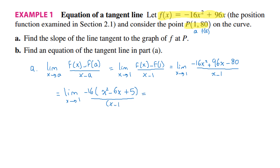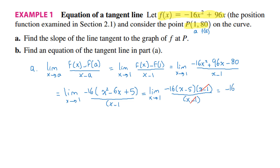Now let's factorize more. We get the limit as x goes to 1 of minus 16 into x minus 5 and x minus 1, divided by x minus 1. We can simplify x minus 1. And then the expression is equal to minus 16 into x minus 5.